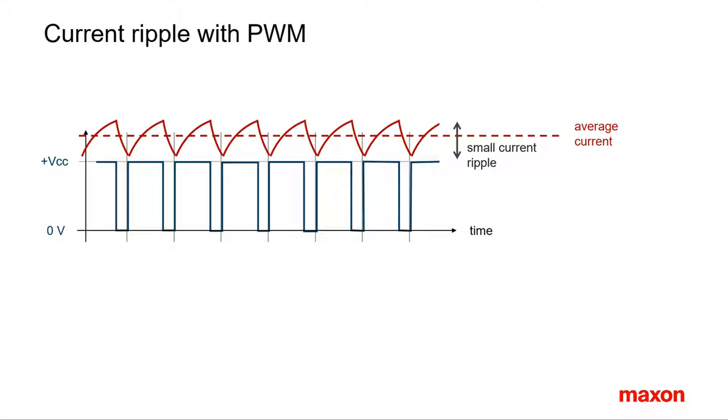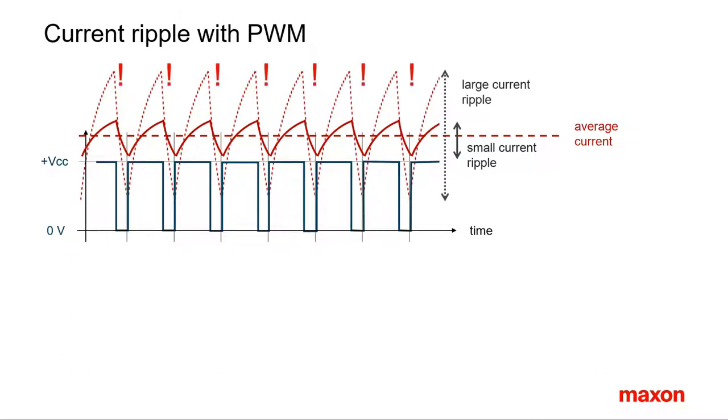Observe, however, it's still the average current that generates the motor torque. A large current ripple can lead to excessive motor heating, because the ripple peaks will heat up the motor more than proportionally. Hence, there is a strong interest in reducing the current ripple, and this is the main focus of this tutorial.